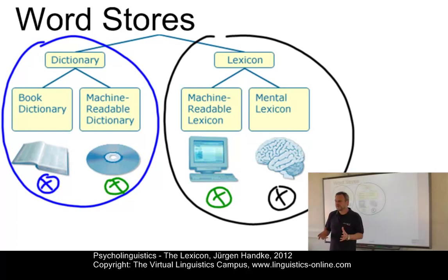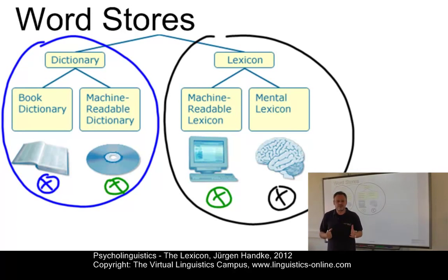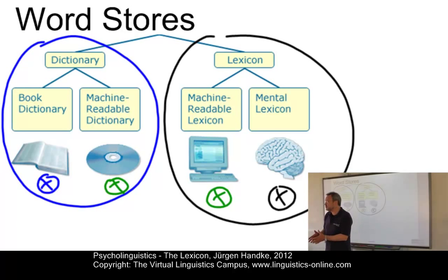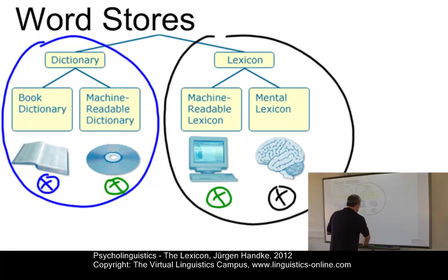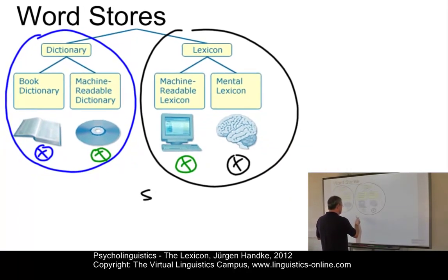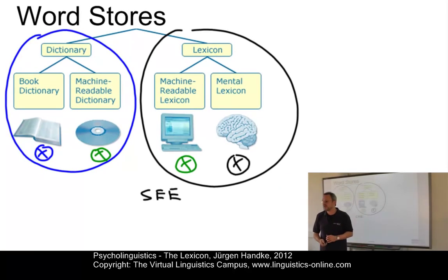The lexicon closely interacts with the other components of grammar and it provides detailed information about the words to be produced or comprehended, from phonology to conceptual. Let's take the lexeme SEE as an example — that is the lexical entry, which is why we use capital letters here.